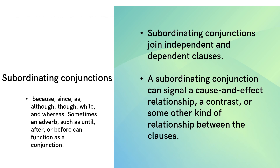A cause-and-effect relationship is expressed using subordinating conjunctions. We can also use adverbs such as until, after, or before as subordinating conjunctions. For example: 'While he was working, his friend came.' Here, 'while' is the conjunction. It shows that while a work is in progress, another thing has happened. Subordinating conjunctions are used to denote such relationships.